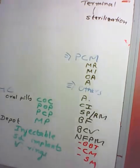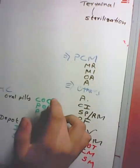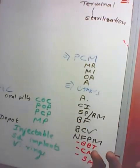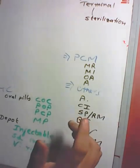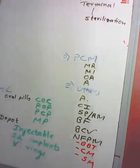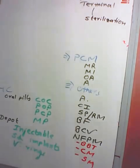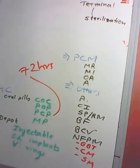Hormonal contraceptives can be oral pills or depot preparations. Combined oral pills contain estrogen and progesterone. Progestogen-only pills contain plain progesterone. The post-coital pill, or morning-after pill, is an emergency contraceptive that must be used within 72 hours of unprotected sexual intercourse.